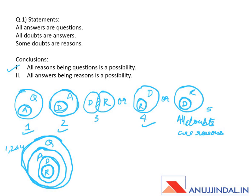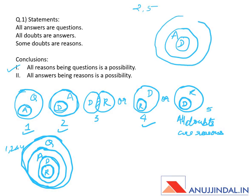The second conclusion is: all answers being reasons is a possibility. For that, let's combine Venn diagrams two and five. In the fifth Venn diagram, doubts are inside reasons, so we make reasons the superset. In the combined diagram of two and five, these are doubts, these are answers, and these are inside reasons. You can see all answers are inside reasons, so all answers being reasons is a possibility. Conclusion two is also correct.